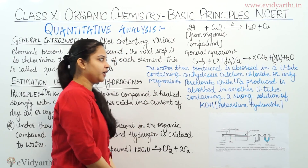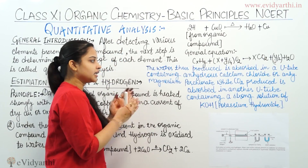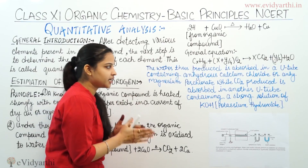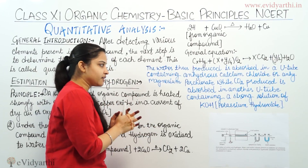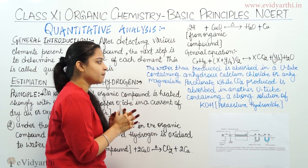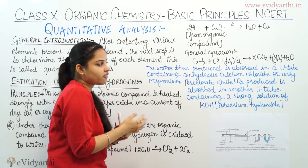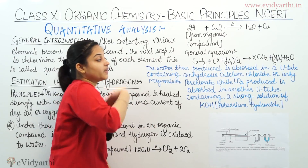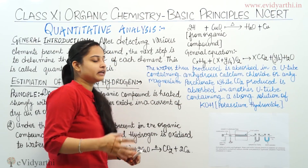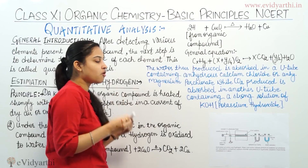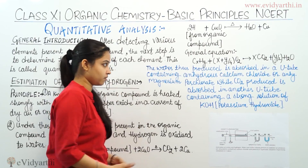The water produced is absorbed in a U-tube containing anhydrous calcium chloride and anhydrous magnesium perchlorate, while the carbon dioxide produced is absorbed in another U-tube which contains a strong solution of potassium hydroxide.